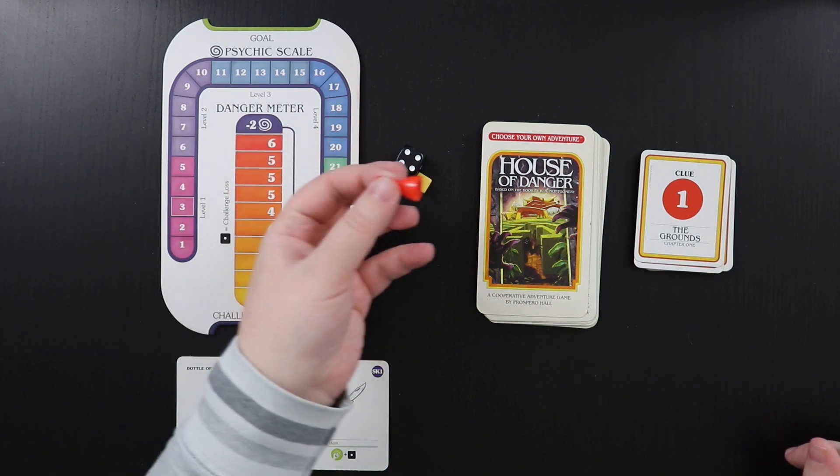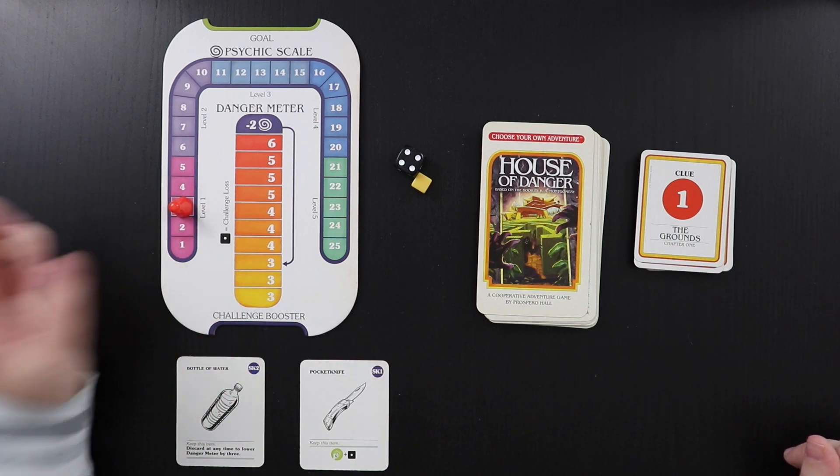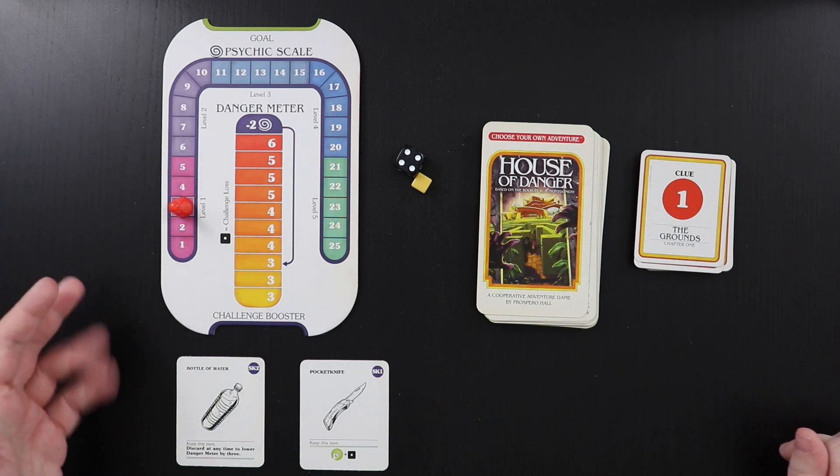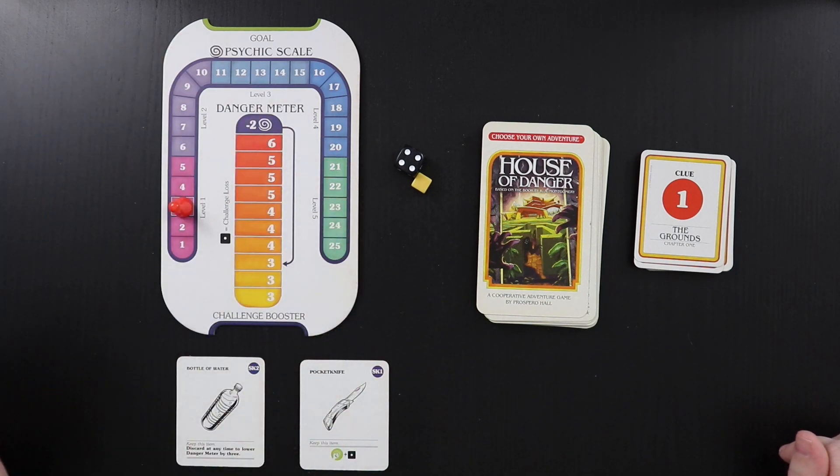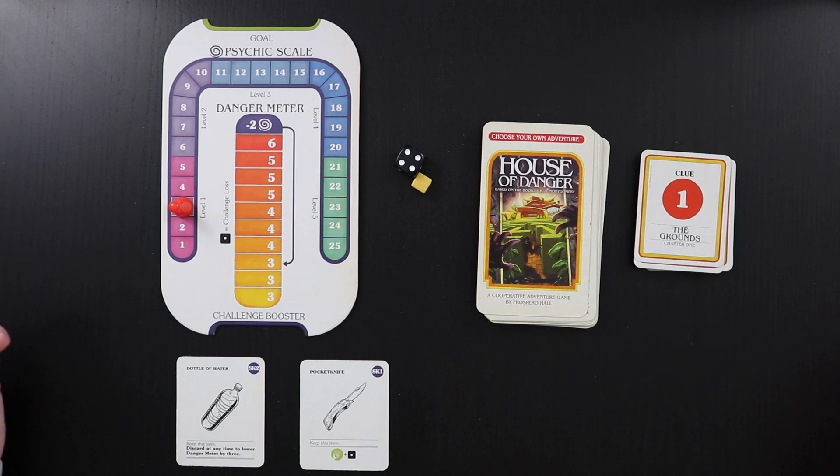So to set up, basically this is a tracker that's going to go on your psychic scale. You start at three. And what happens here is that you're going to have different challenges and stuff throughout the game that increase your psychic power, or if you do badly it can go down. And what the psychic scale is going to do is it's going to enable you to see visions and get extra clue cards throughout the game if you're at a higher level. So you definitely want to do stuff to make your psychic scale go up.